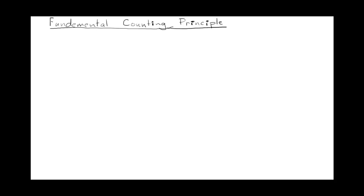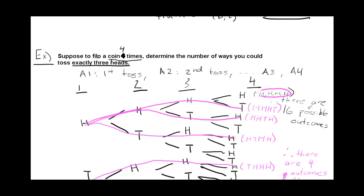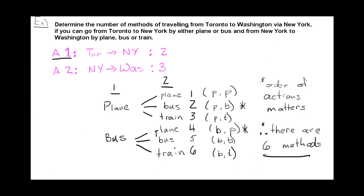Welcome to the lesson on the Fundamental Counting Principle. You should have just seen the lesson on tree diagrams, so we're going to go back to that first example where you were taking the train from Toronto to Washington via New York. There were two ways to get from Toronto to New York — plane or bus — and three ways to get from New York to Washington: plane, bus, or train. In total there were six ways.